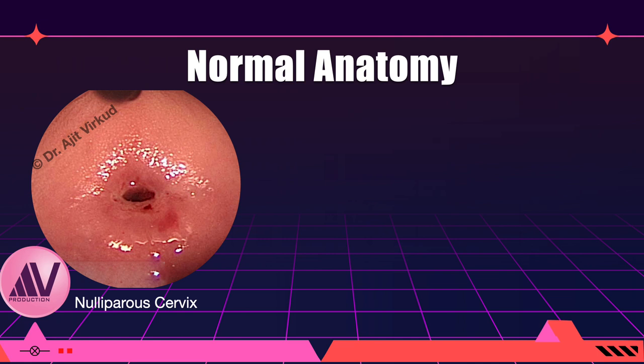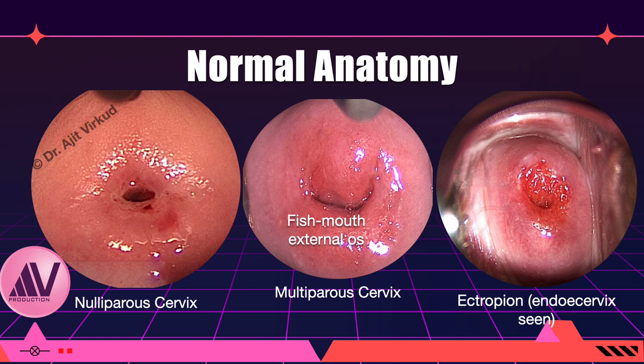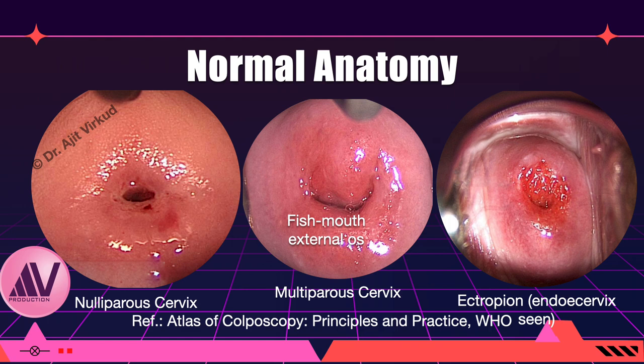The picture on the left is an actual close-up view of the normal nulliparous cervix, which has a smooth rounded pinpoint external os. The picture in the middle is an actual close-up view of the normal multiparous cervix, which has an uneven and wide external os, often described as having a fish mouth appearance. The parous cervix is more bulky than the nulliparous cervix. The picture on the right shows a normal multiparous cervix with ectropion. The pictures are taken from an atlas of colposcopy.